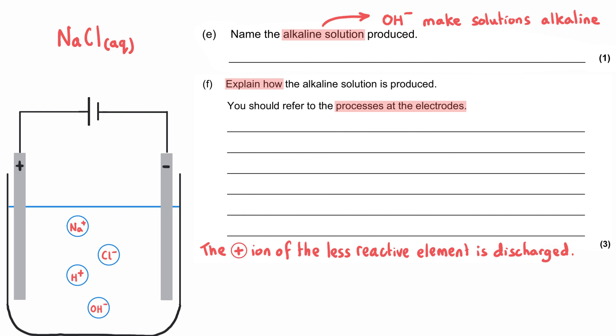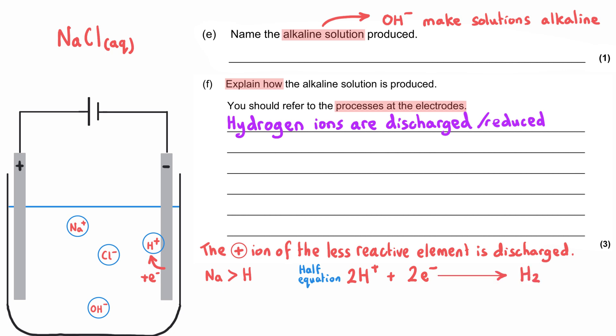The less reactive substance forms its ions less readily by losing electrons, and therefore it will more easily gain electrons and turn back into the element. Since sodium is more reactive than hydrogen, the hydrogen ion is the ion of the less reactive element. That means it will be discharged at the negative electrode by gaining electrons and being reduced. The equation for this is 2H+ gains two electrons and becomes H2. We'd see bubbling at the negative electrode.